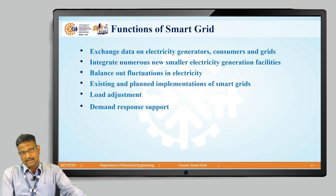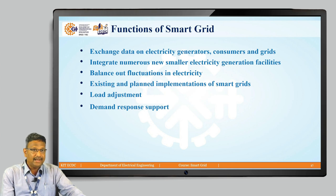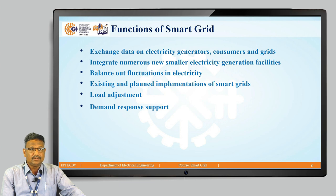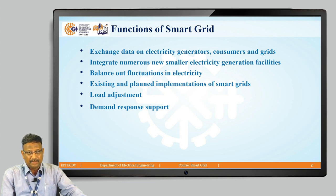The different functions of the smart grid include: exchanging data on electricity generation, consumers, and grid on a priority basis; integrating numerous new smaller electricity generating facilities; balancing out fluctuations in electricity; supporting existing and planned implementation of small grids; and load adjustment at a large scale. Loads are sometimes switched up or down, so load adjustment and demand response are supported, as forecasting data is available to be taken into consideration.